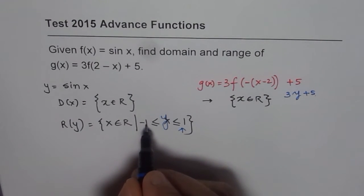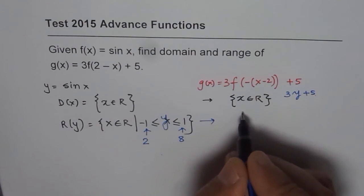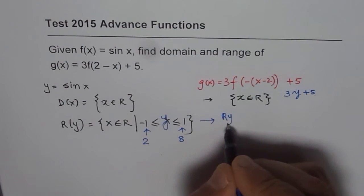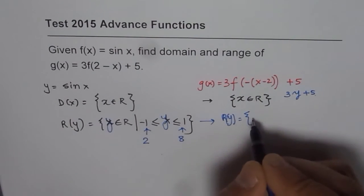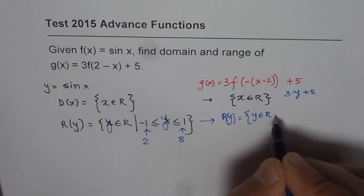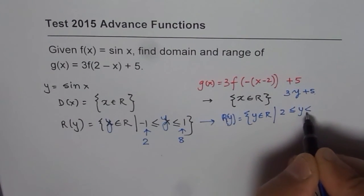So if I multiply this by 3 and add 5, what do I get? Minus 3 plus 5 is plus 2. How about this point? 3 times 1 is 3, and 3 plus 5 is 8. And therefore, our range will change and range for the transformed function is going to be y belongs to real numbers so that y is between 2 and 8, both included.